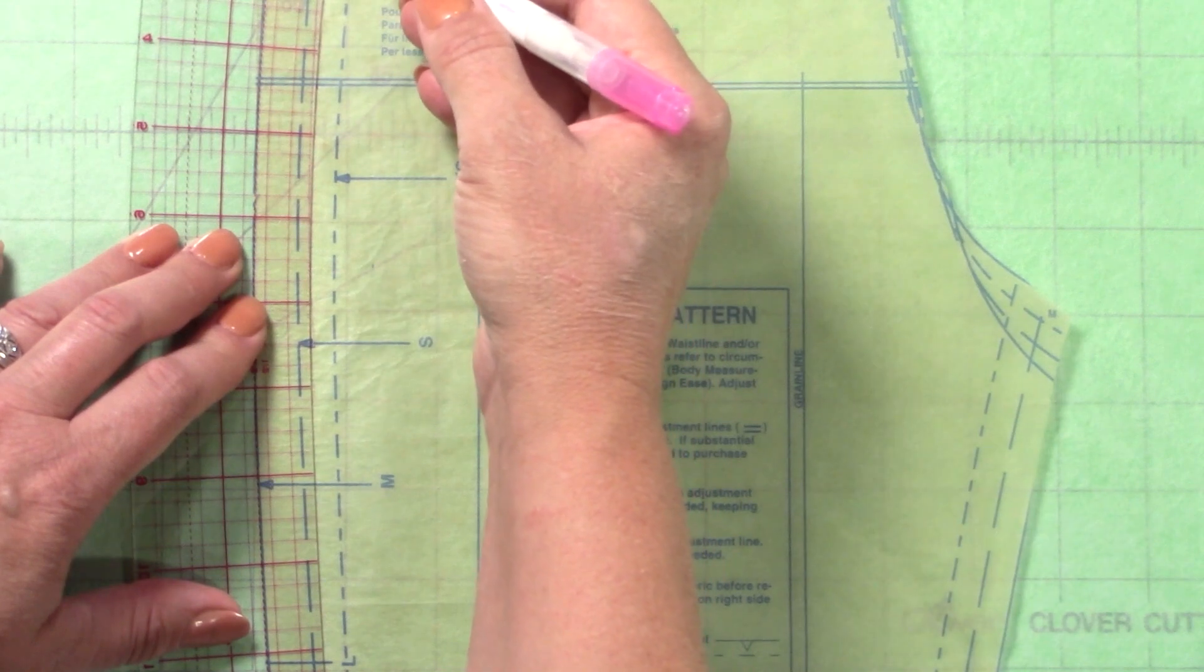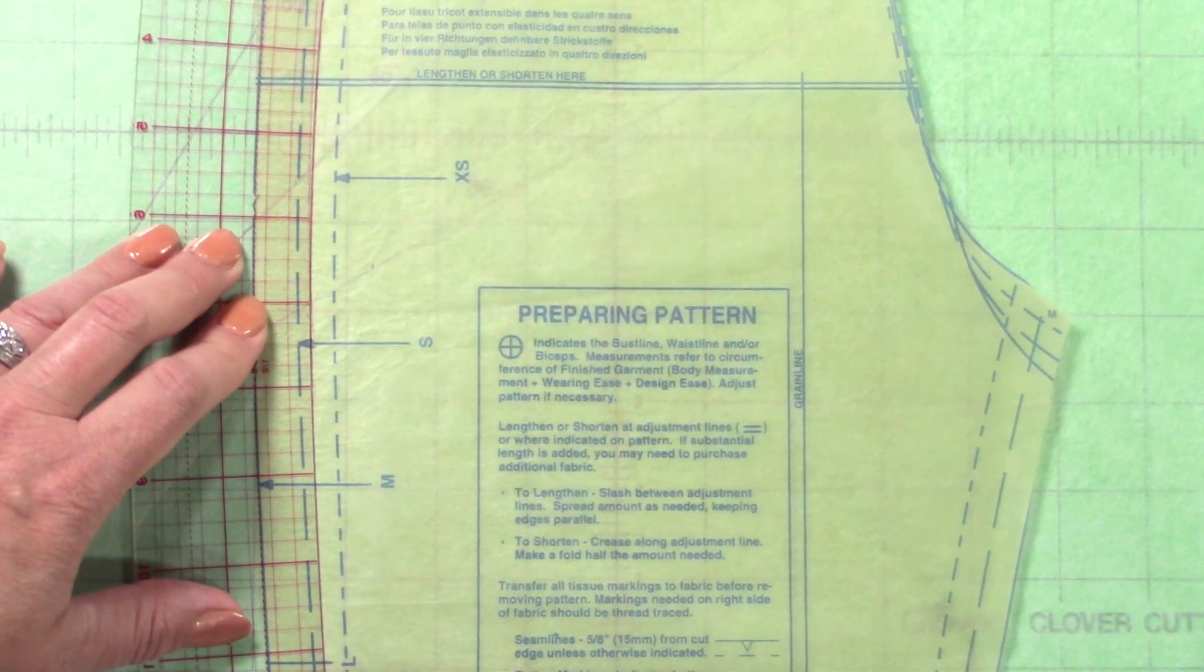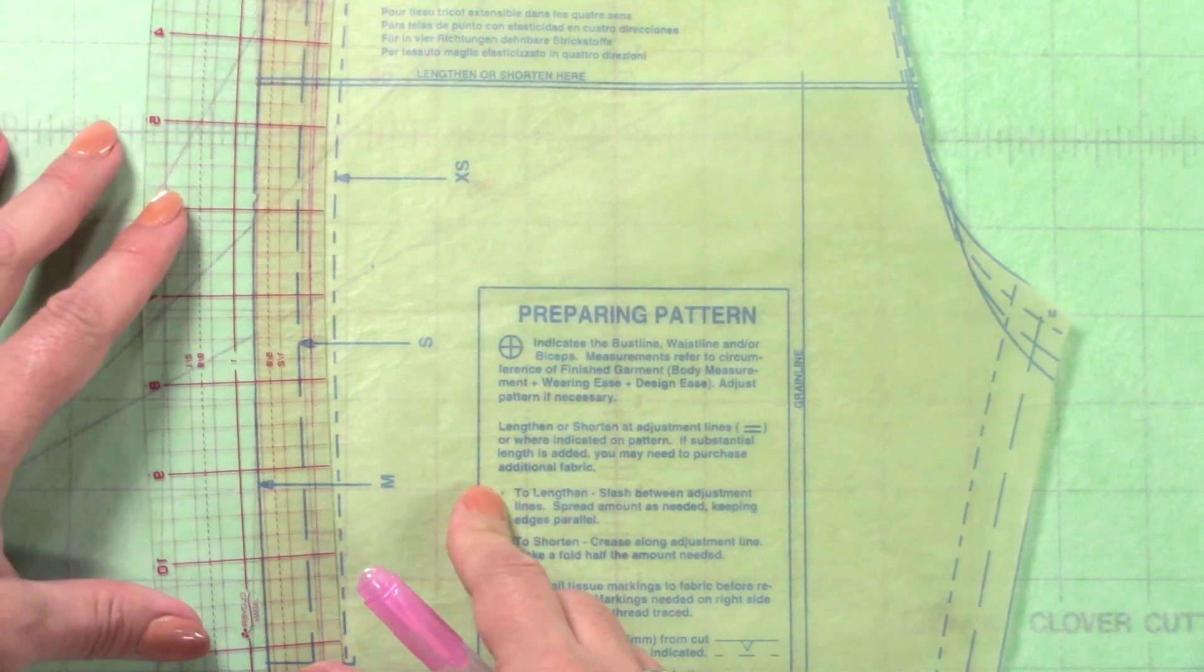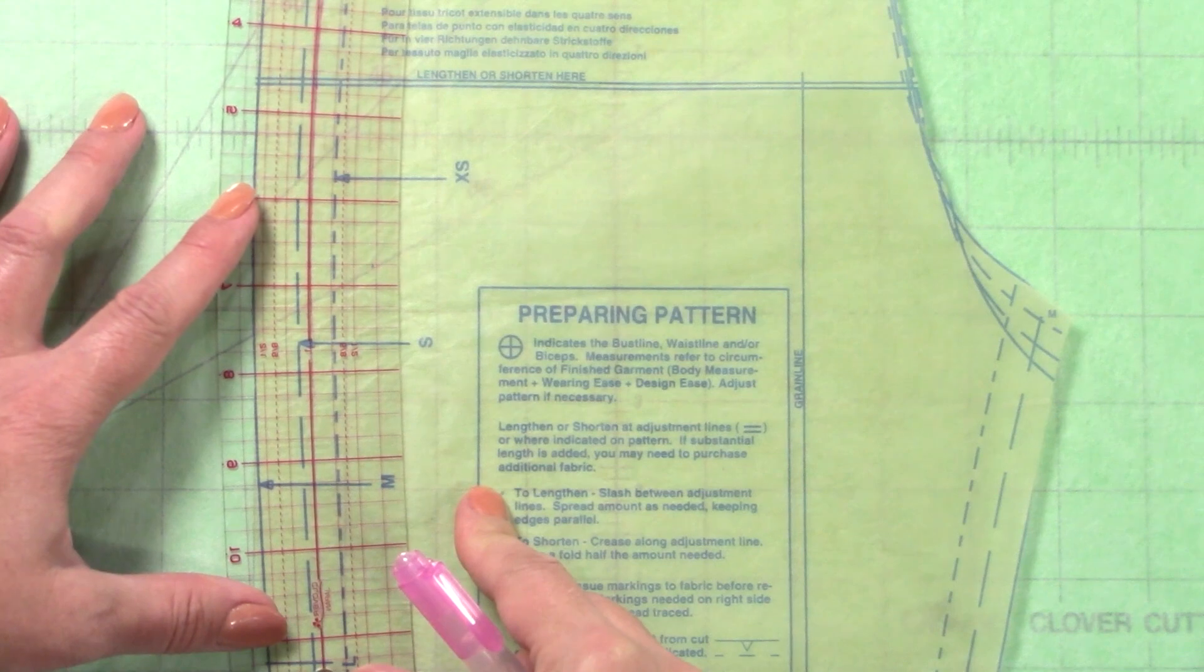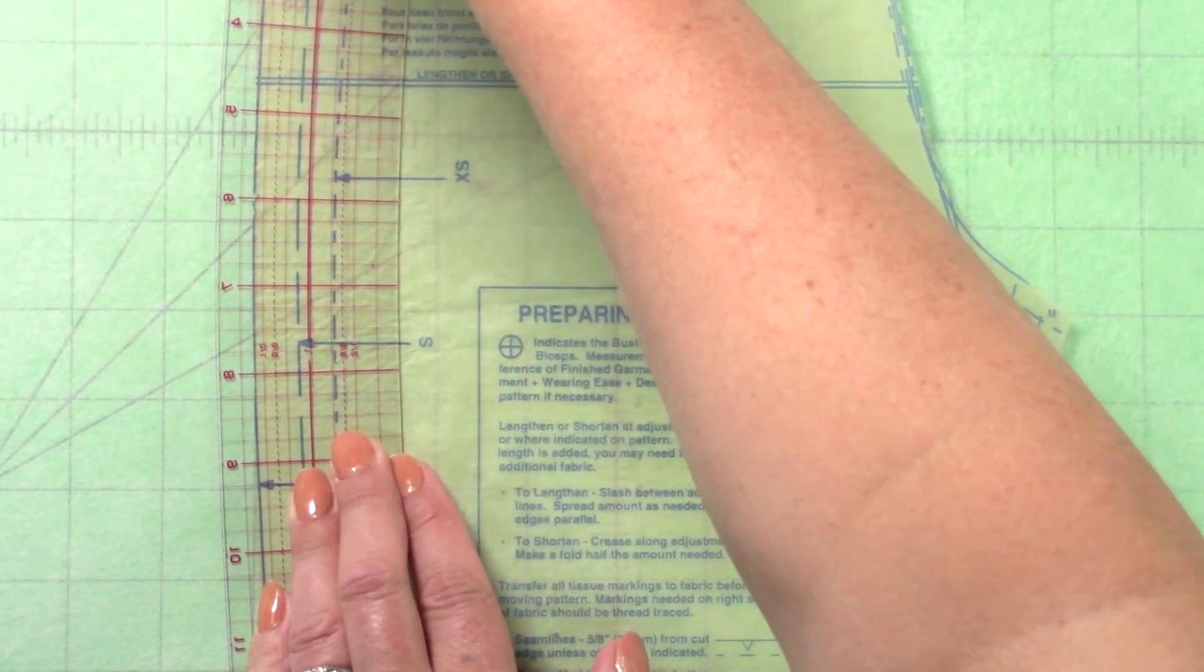The second curved ruler is designed as a hip curve for shaping side seams of skirts, slacks, dresses, and long jackets. The ruler markings are perfect for adding wider seam allowances to side seams for easier garment fitting.